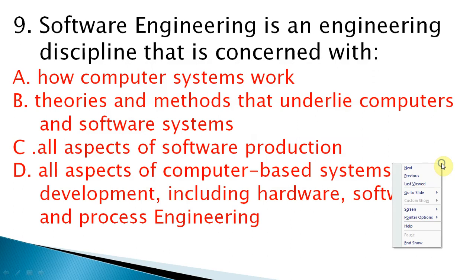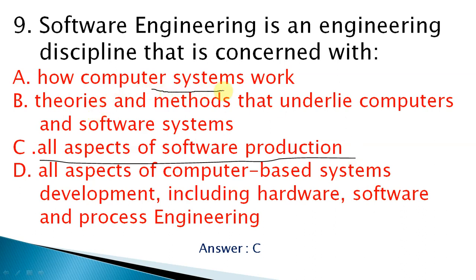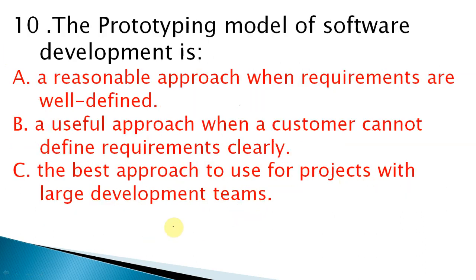Ninth question: software engineering is an engineering discipline concerned with — options include how computer systems work, theories that underline computers, all aspects of software production, and all aspects of computer-based system development including hardware. The correct answer is C: all aspects of software production. Software engineering is about developing software — it does not cover hardware or underlying computer theory.